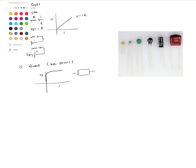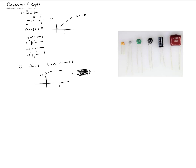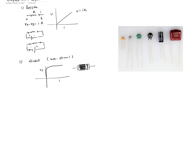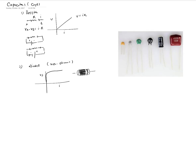Most diodes are painted in black color. There is a white strip that denotes the negative side — we have the cathode, which is the negative, and the anode, which is the positive. The voltage has to be applied in the forward direction before the current would flow. If you apply the voltage in the opposite direction, the current is not going to flow. So these are unidirectional elements.